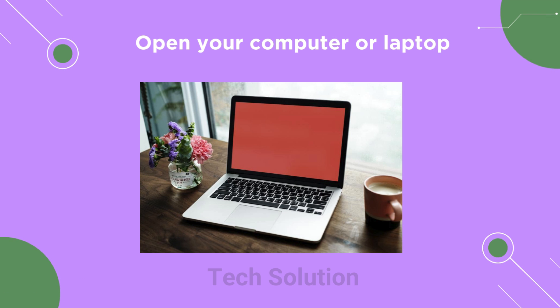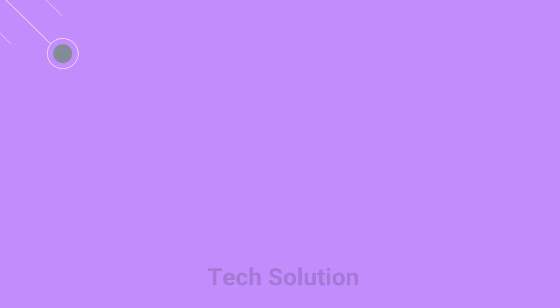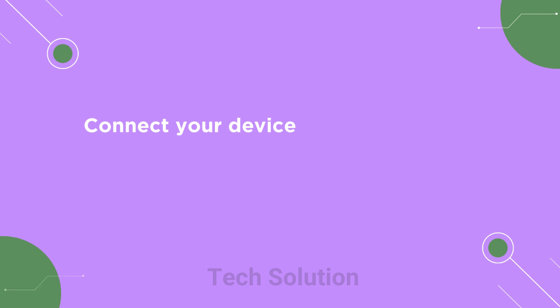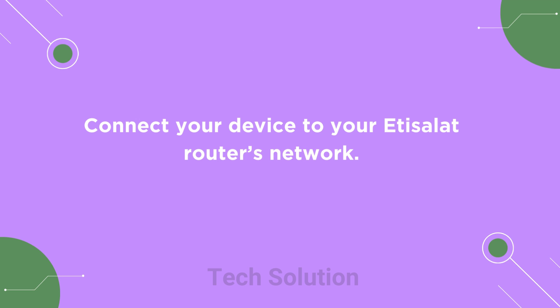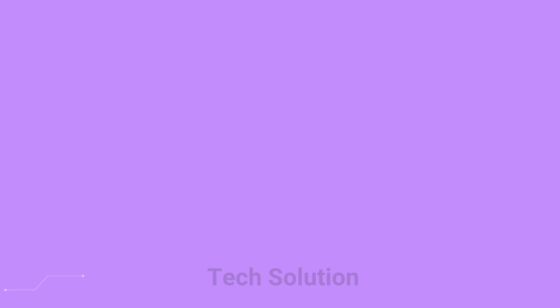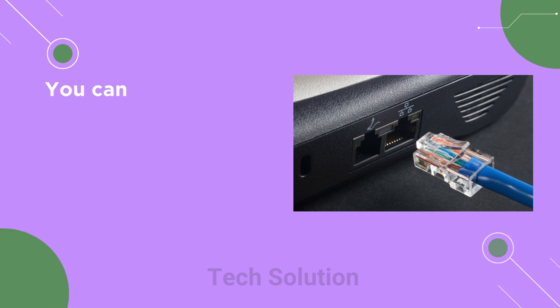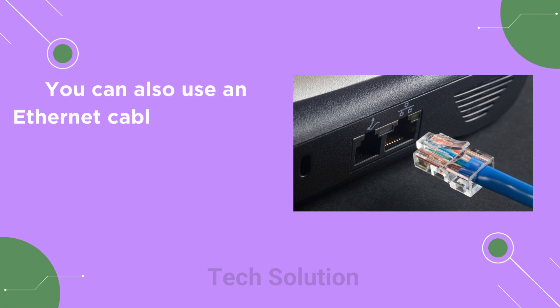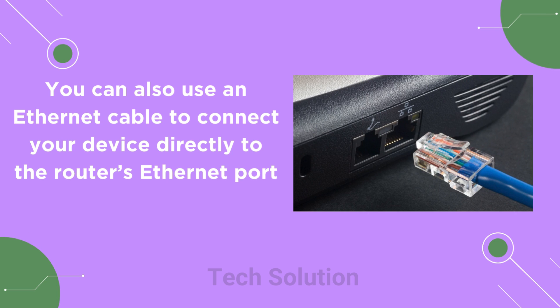Open your computer or laptop. Connect your device to your Etisolet Router's network. You can also use an Ethernet cable to connect your device directly to the router's Ethernet port.